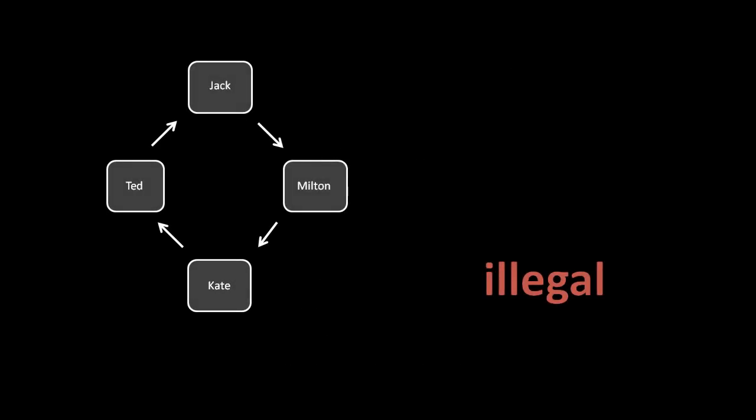What's definitely not allowed in any language is circular inheritance, wherein a class ends up indirectly inheriting from itself — for example, Kate inherits from Ted, Ted from Jack, Jack from Milton, and Milton back from Kate. No languages allow this because it simply doesn't make any sense.